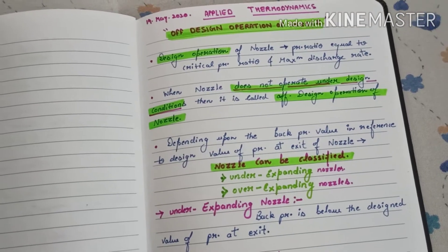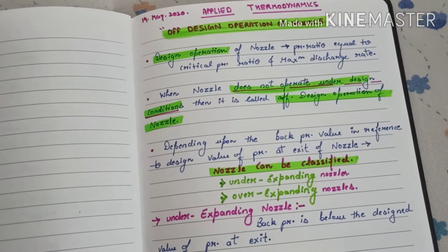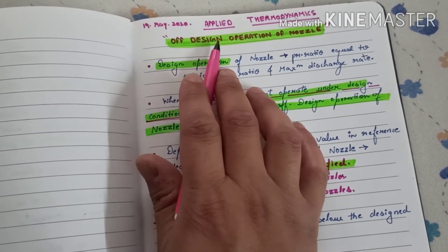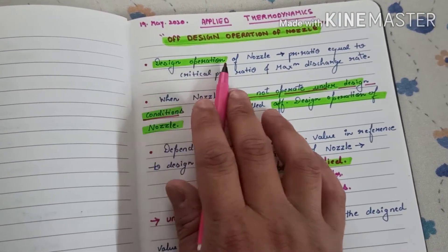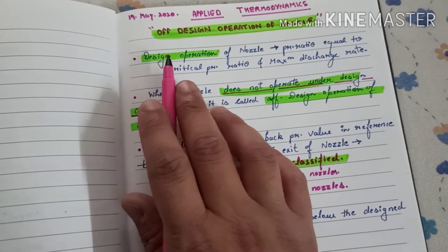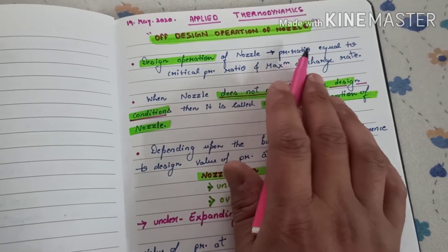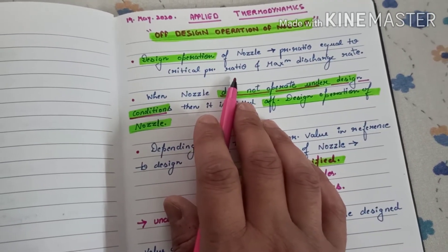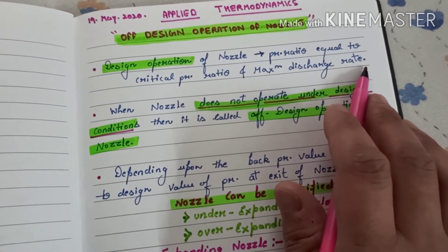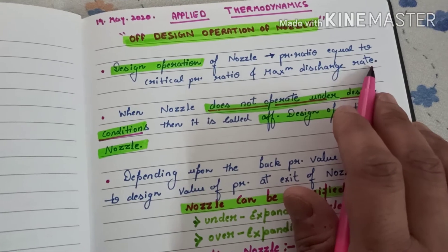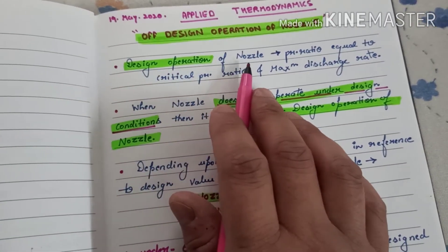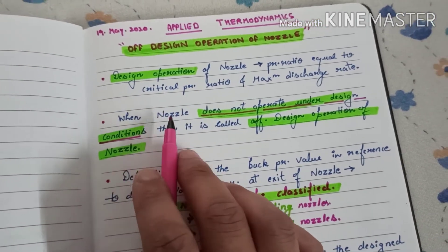In this video we will be talking about the off-design operation of nozzles. Before starting about the off-design, let us study about what is the design operation of a nozzle. It is a design condition for the nozzle when the pressure ratio equals the critical pressure ratio, meaning when there will be a maximum discharge rate or maximum flow rate of fluid through the nozzle.